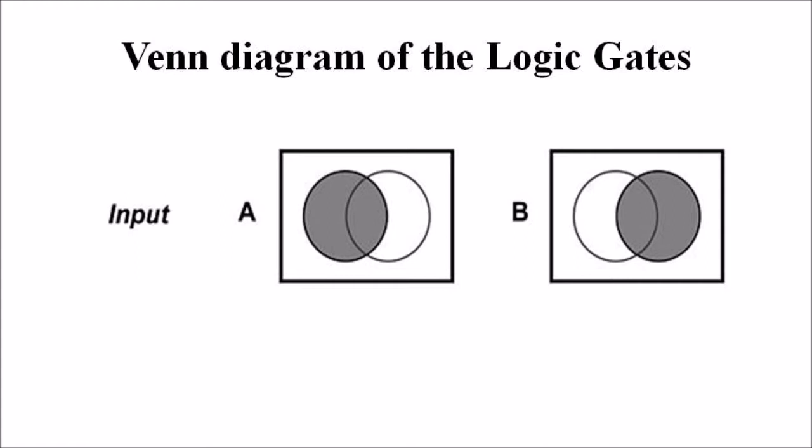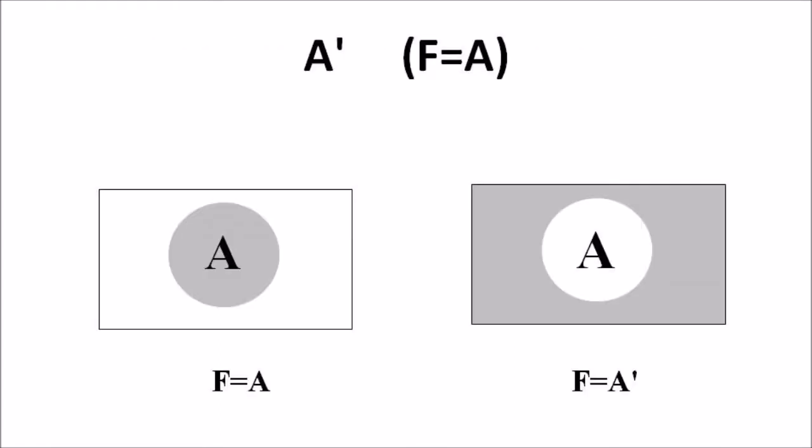Now let us consider how other functions are represented in a Venn Diagram. First we are considering the function f equals A, and f equals A-bar. The area is represented by a rectangle in which the variable A is given as a circle. If f equals A, we shade the circle representing A. If f equals A-bar, which means NOT A or outside A, then A is not shaded and the remaining portions are shaded, meaning we are considering all variables outside A.